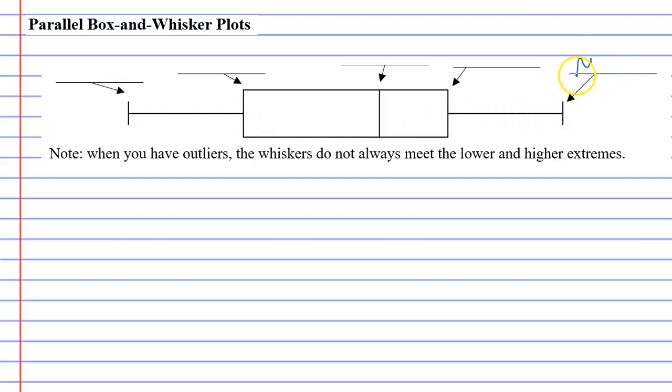This is called the maximum value, or the higher extreme. We can see the maximum value is at the end, and the beginning point is called the minimum value, or the lower extreme. We also have the line in the middle which represents the median.